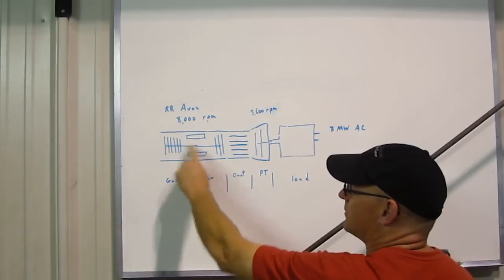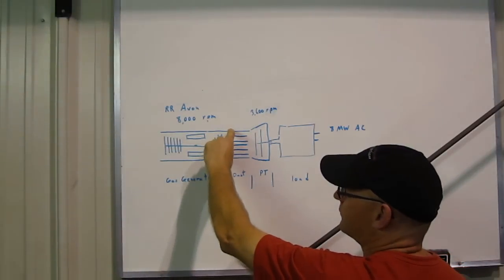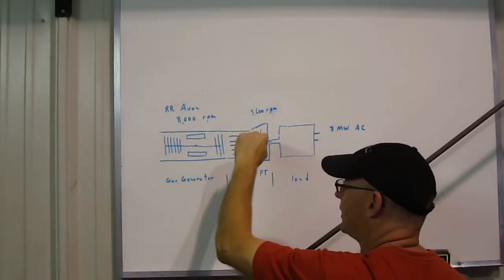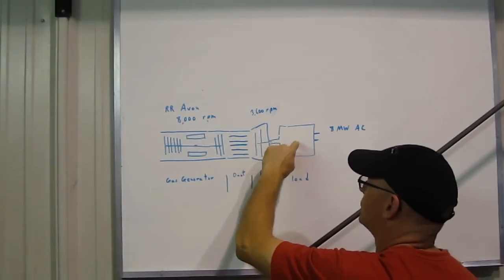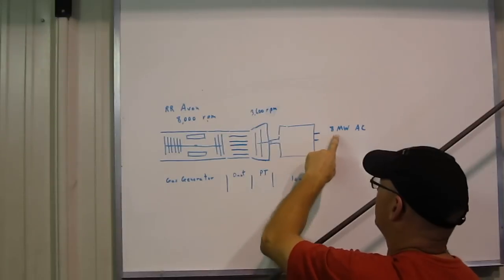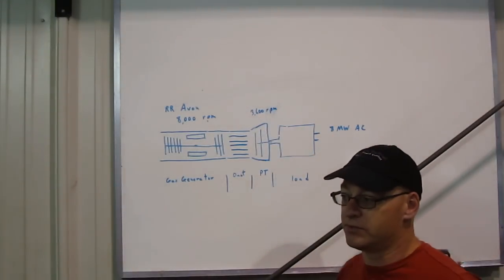Anyway, this spins at 8000, produces a massive quantity of hot gases flowing in the rearward direction, drives this power turbine at 3600 RPM, driving the electrical generator where you have your 8 megawatts of AC to feed into the grid.